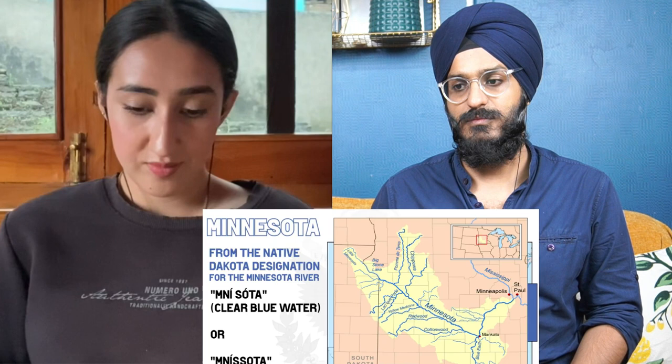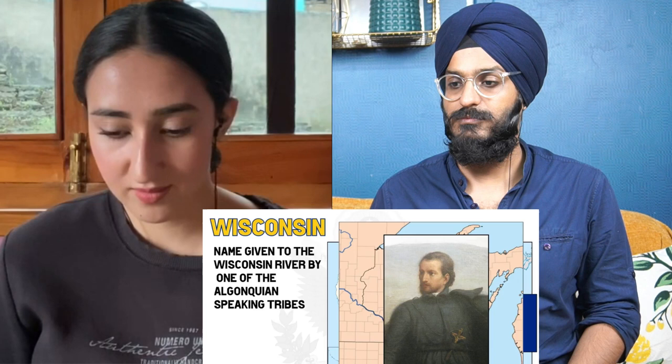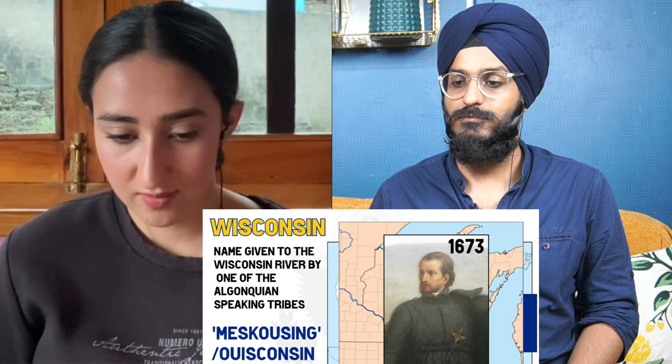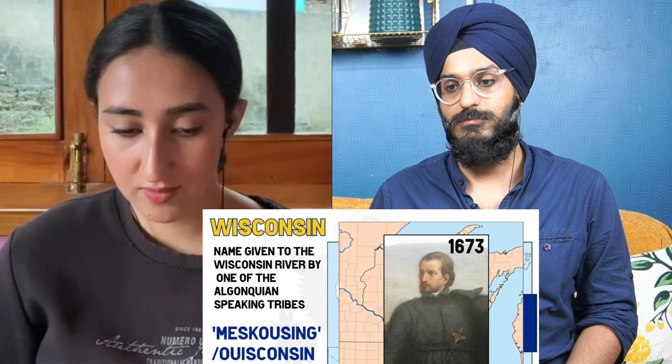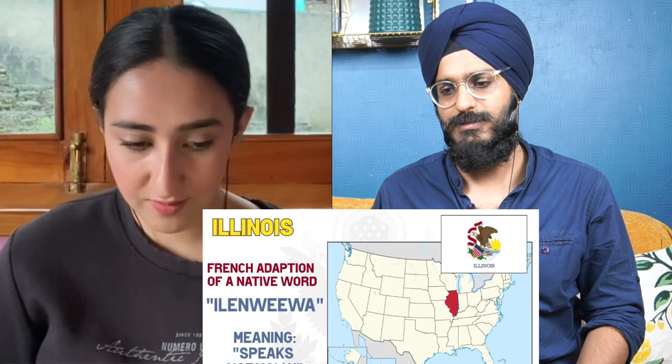It's said the Dakota people demonstrated that the river had a big impact on water, making 'cloudy water' the likely right meaning for Minnesota. Wisconsin originates from the name given to the Wisconsin River by one of the Algonquin-speaking tribes. French explorer Jacques Marquette was the first European to reach the Wisconsin River in 1673, calling the river 'Meskonsing.' Subsequent French writers changed the spelling to Wisconsin, and over time this became the name for both the river and state.